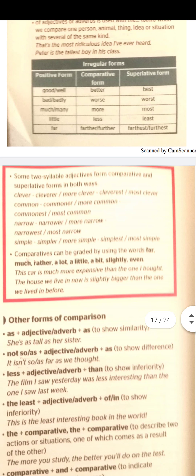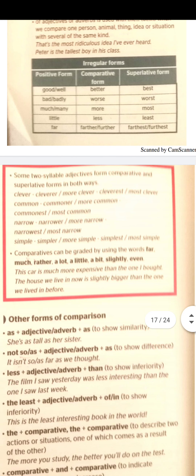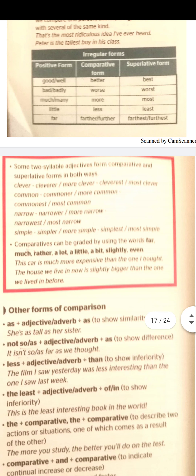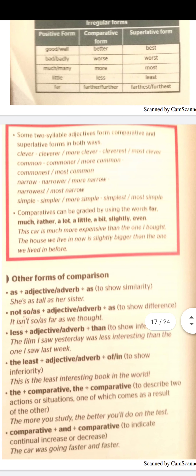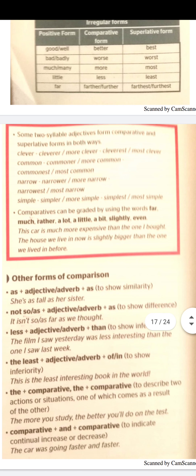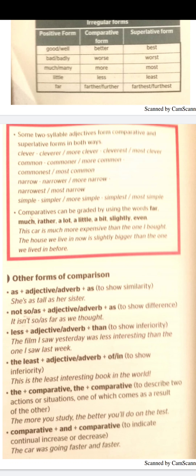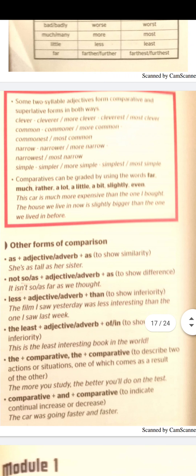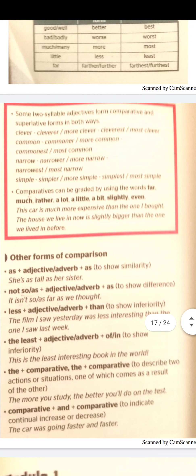Before comparatives, we can use modifiers such as: 'far', 'much', 'rather', 'a lot', 'a little', 'a bit', 'slightly', and 'even'. We also have other forms for comparison. 'As...as' is used to show similarity.